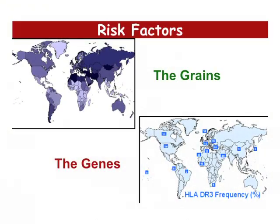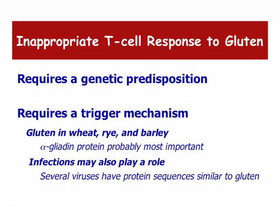What causes celiac disease? It's a combination of genes and grains. Maps of the world show that the genes associated with celiac disease are found throughout the world, and the grains that cause the problem are also found throughout the world — which is why we find celiac disease in every part of the world. At its core, it's an inappropriate response of T-cells to gluten that causes inflammation in the intestine.